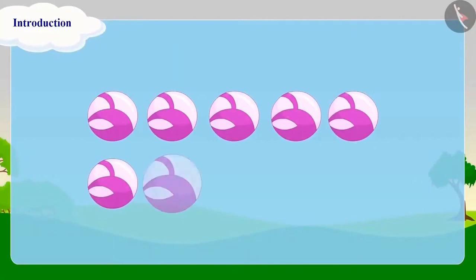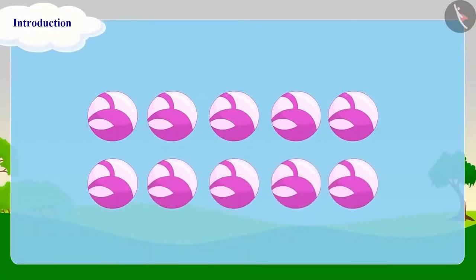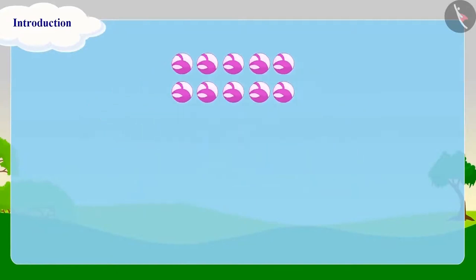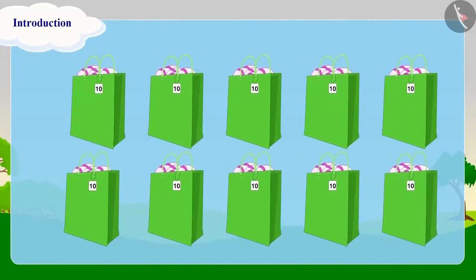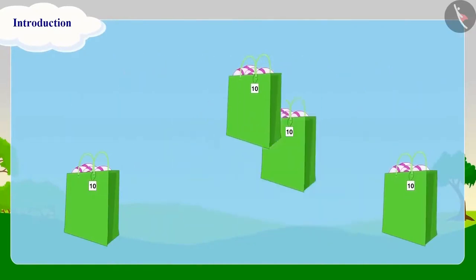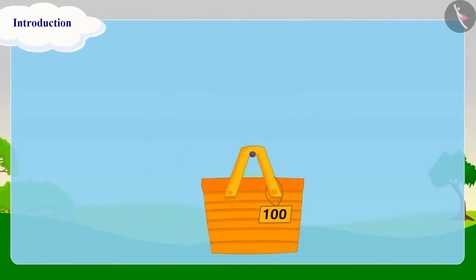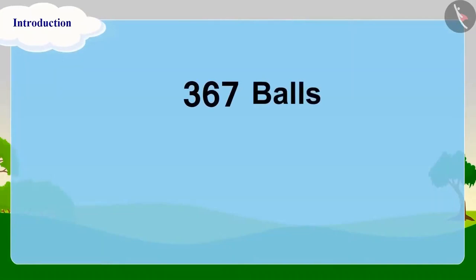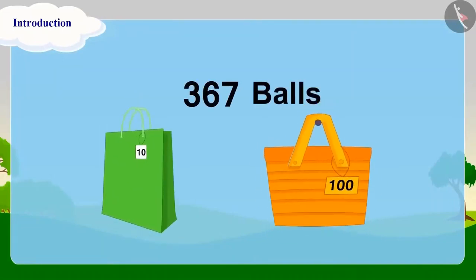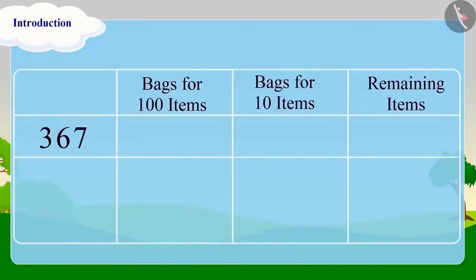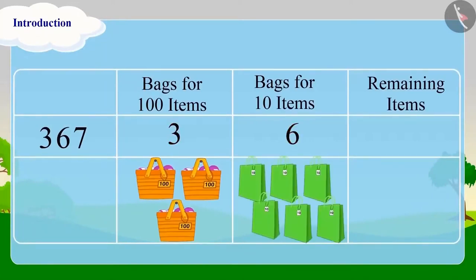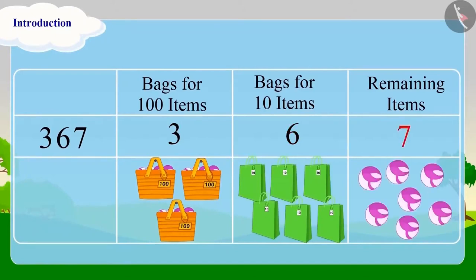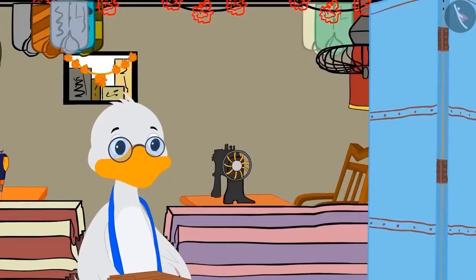Suppose you have to buy 367 balls from Bunny. Instead of counting one by one, count in groups of 10 using the bags for 10 items. Then collect all 10 bags and make a bag of 100 items. In this way we can easily count 367 balls: we will have 3 bags of 100 items, 6 bags of 10 items, and 7 balls. Uncle shows Appu how fast this counting method is.